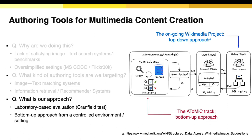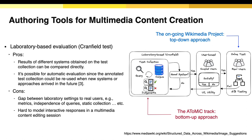And what is our approach? Our approach is based on the Cranfield-style test setting, which involves the query, the corpus, and the relevance judgment. We are aware of the Wikipedia project that implements the image suggestion function. We think that is more like a top-down approach, and in contrast, our approach is more like a bottom-up approach. The main advantage of the Cranfield-style test is that we can compare different systems or techniques on the same test collections.